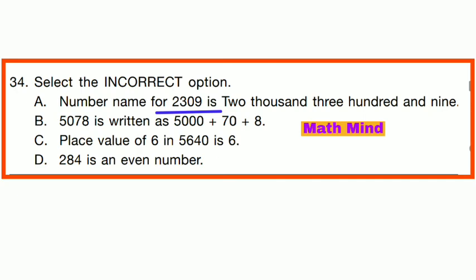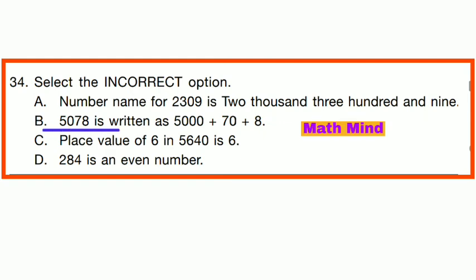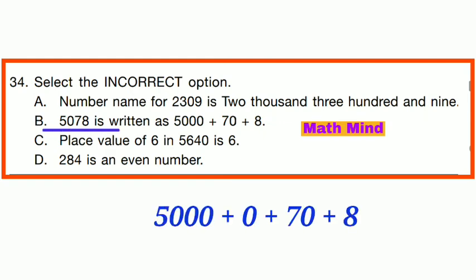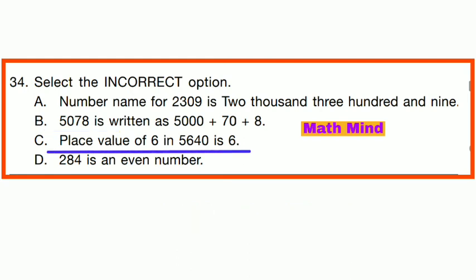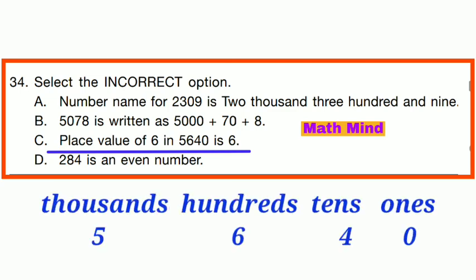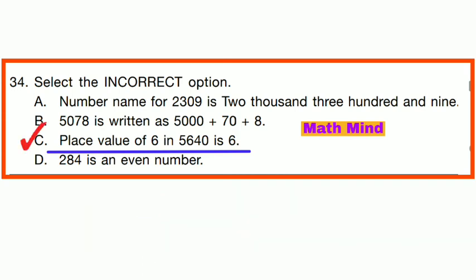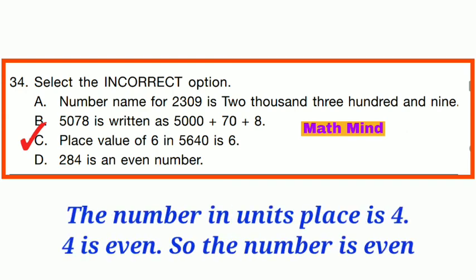Question No. 34: Select the incorrect option. Option A: 2309's number name is correct. Option B: 5078's expanded form 5000 + 70 + 8 is correct. Option C: Place value of 6 in 5640 — this states 6, but the correct place value is 6 × 100 = 600. So Option C is incorrect. Option D: 284 is an even number since the units digit 4 is even — this is correct.